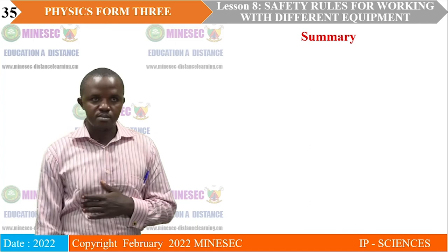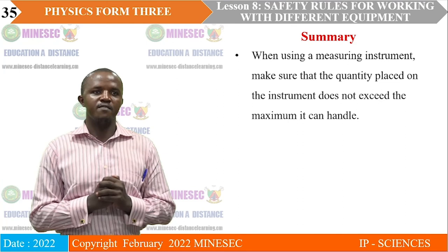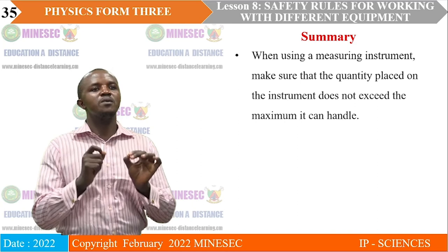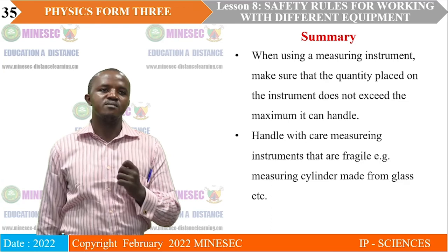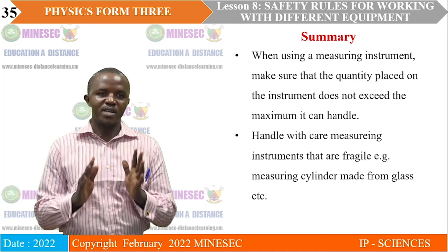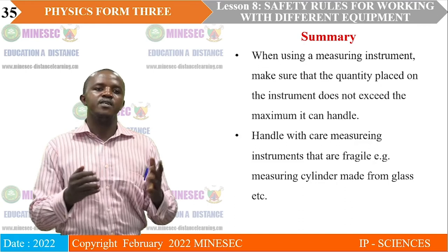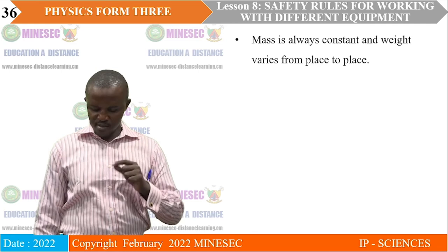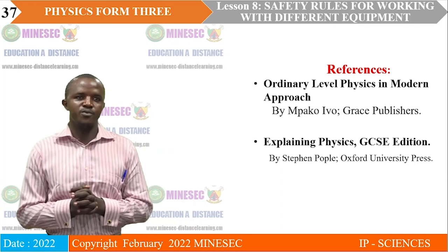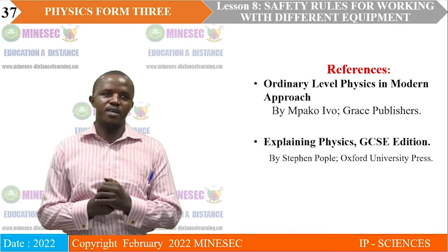In summary, today we have learned that when using a measuring instrument, make sure the quantity placed on the instrument does not exceed the maximum it can handle — that is the key point from today's lesson. Handle with care any measuring instruments that are fragile, such as measuring cylinders made from glass. Mass is always constant and weight varies from place to place — don't forget that. For references, you can consult 'Ordinary Level Physics: A Modern Approach' by Mbako Ievo, published by Chris Publishers.